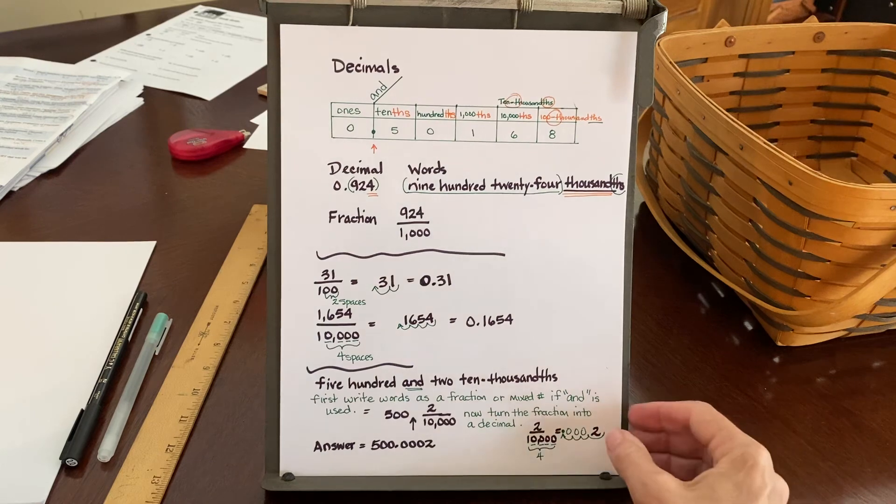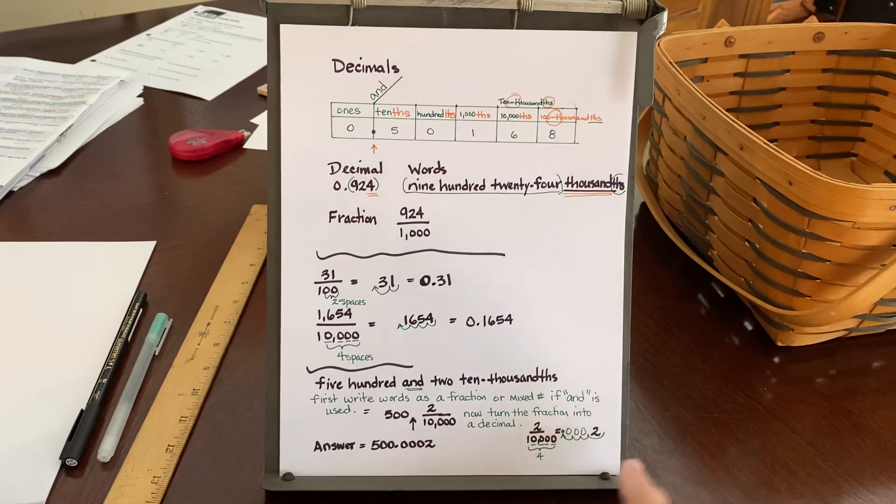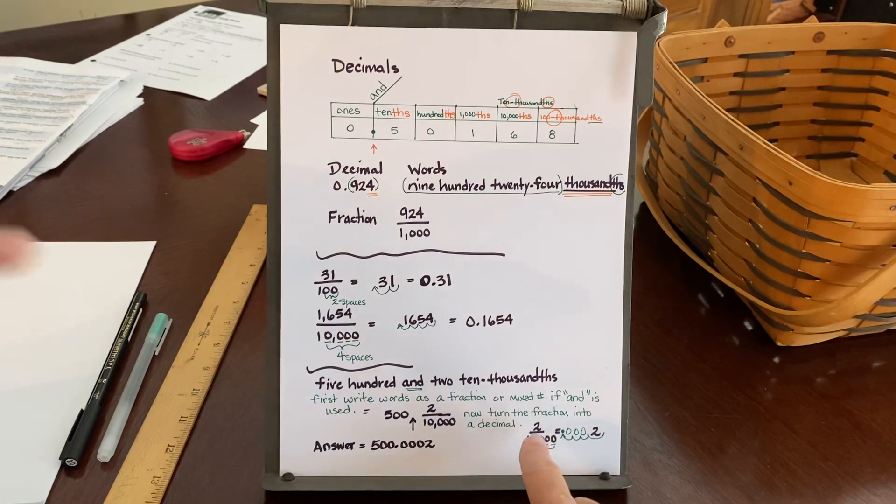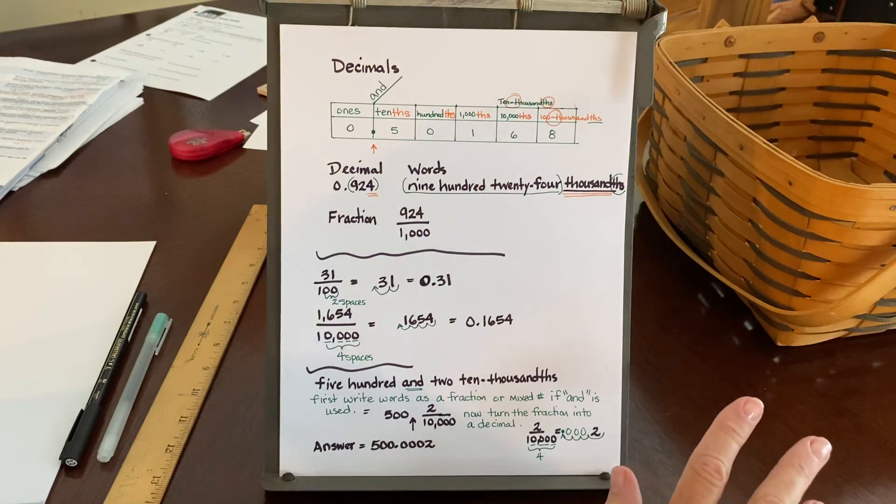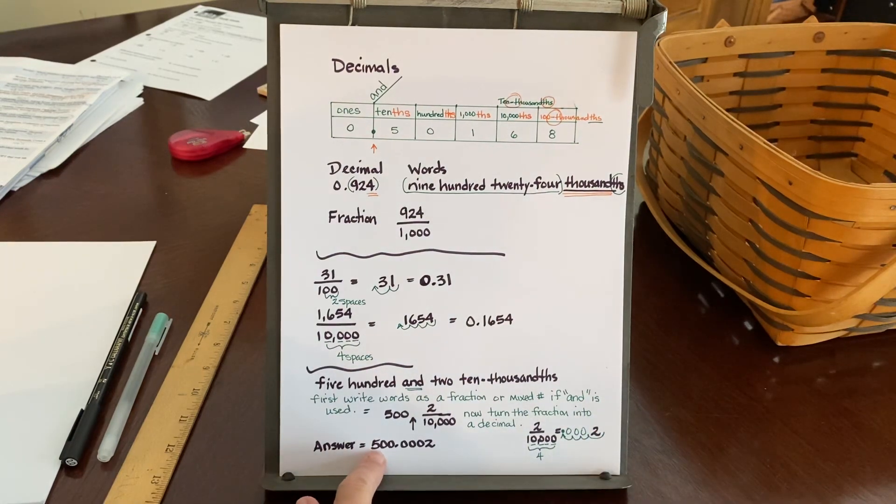So, I put my two down and now I am going to mark off, going to the left, one, two, three, four places. And then I've got to fill in with missing zeros. So I'm actually putting in three zeros in front of that number two. So my new answer is 500.0002.